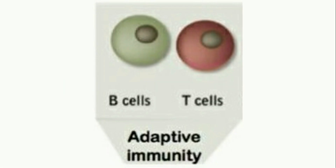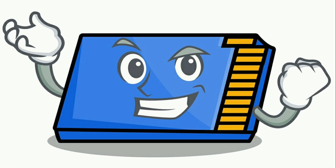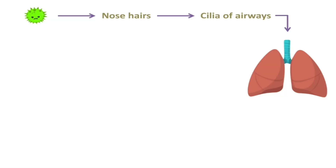If a pathogen passes both the first and second lines of defense, the adaptive immunity — or the third line of defense — begins the battle. The adaptive immune response consists of specialized cells with receptors specific to one pathogen. It is much slower — taking days to weeks — but it can make memory, memorizing the structure of the pathogen. If the same pathogen enters the body again, it will be attacked and eliminated in a faster and better way.